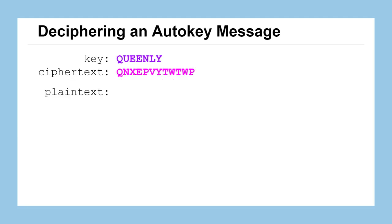Here we've got a new ciphertext message with a priming key 'queenly'. As the receiver, we can start decoding even without the rest of the key: as soon as we decipher the first character and get the plain text letter A, that becomes the next character in our running key. We move on and decipher the next character, which gives us the next letter in our running key, and so on — going one letter at a time until we've deciphered the entire message.